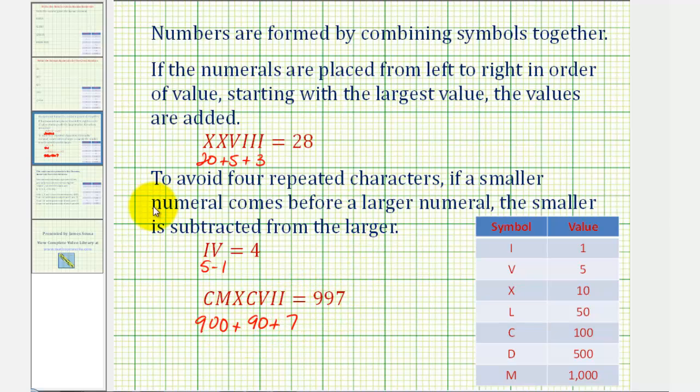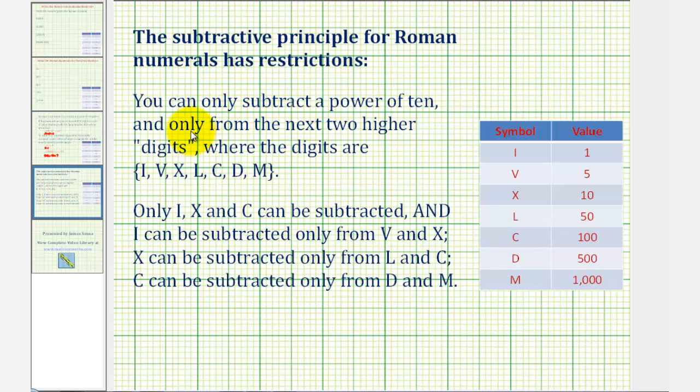This subtraction principle can be a little involved because there are restrictions. You can only subtract a power of 10, and only from the next two higher digits. Which means only i, x, and c can be subtracted. I can only be subtracted from v and x. X can only be subtracted from l and c. And c can be subtracted only from d and m.